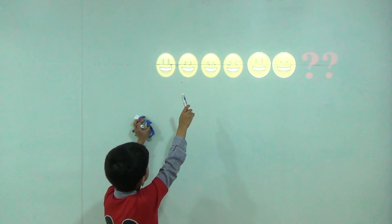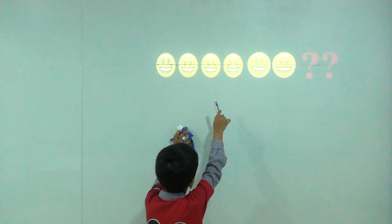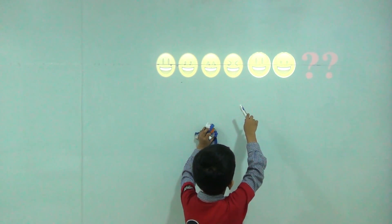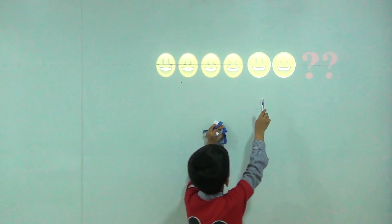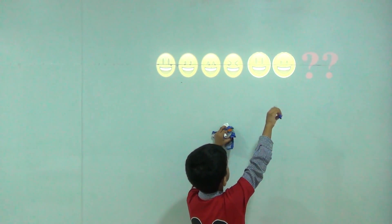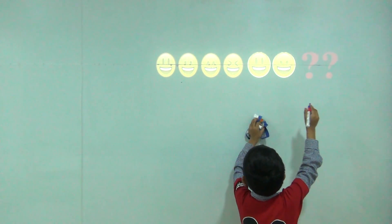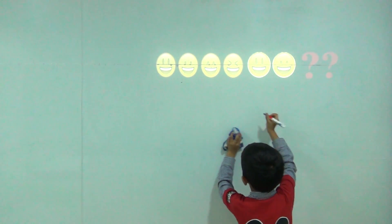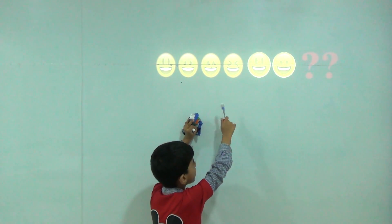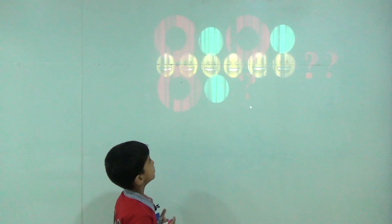Oval eyes smiley, circle eyes smiley, down eyes smiley, opposite eyes smiley, oval eyes smiley, circle eyes smiley. So here would be down eyes smiley and opposite eyes smiley.